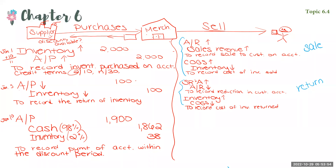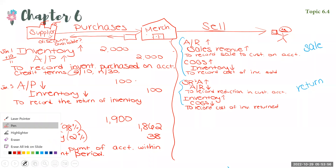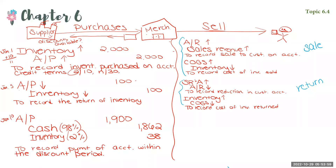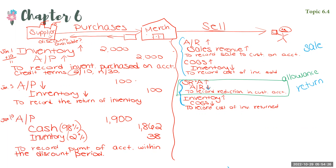Remember, this account is Sales Returns and Allowances. If instead we had just granted an allowance, you would only do the first entry and not the second one. So if a problem says an allowance is granted to a customer, just do that first entry. If it's a return, you do both — because in a return, you reduce the customer's account and you show the inventory coming back. You'll also know you need two journal entries if the problem gives you two separate amounts.